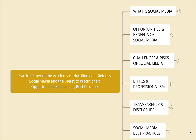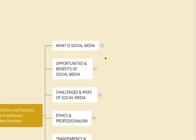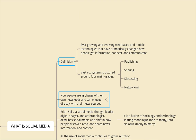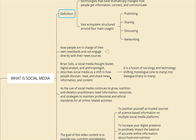Hello registered dietitians, this is Sean. In this video, let's talk about the practice paper from the Academy of Nutrition and Dietetics: 'Social Media and the Dietetics Practitioner: Opportunities, Challenges, and Best Practice.' Social media's definition is an ever-growing and evolving web-based and mobile technology that has dramatically changed how people get information, connect, and communicate. It is a vast ecosystem structured around four main usages: publishing, sharing, discussing, and networking.